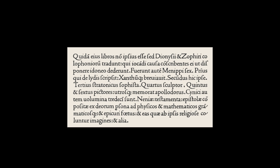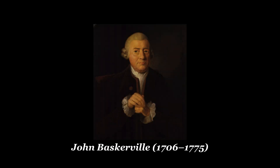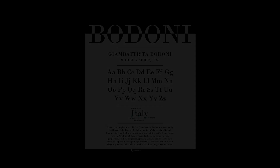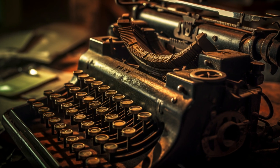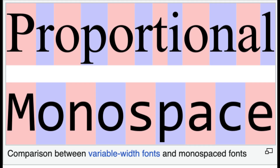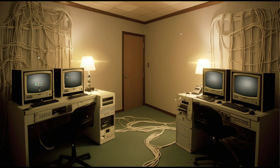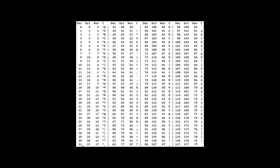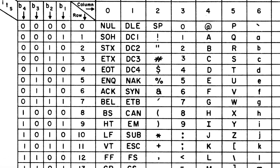The Renaissance saw humanist scholars revive classical letter forms of ancient Rome, leading to the Roman typeface characterized by clearer, more streamlined letter shapes. The 18th century brought transitional and modern typefaces by designers like John Baskerville and Bodoni, with sharper contrast between thick and thin strokes for a more refined aesthetic. With the typewriter in the 19th century, font design faced new challenges — typewriter fonts were monospaced, with each character occupying the same horizontal space, creating a uniform rhythm that was efficient and visually distinctive.